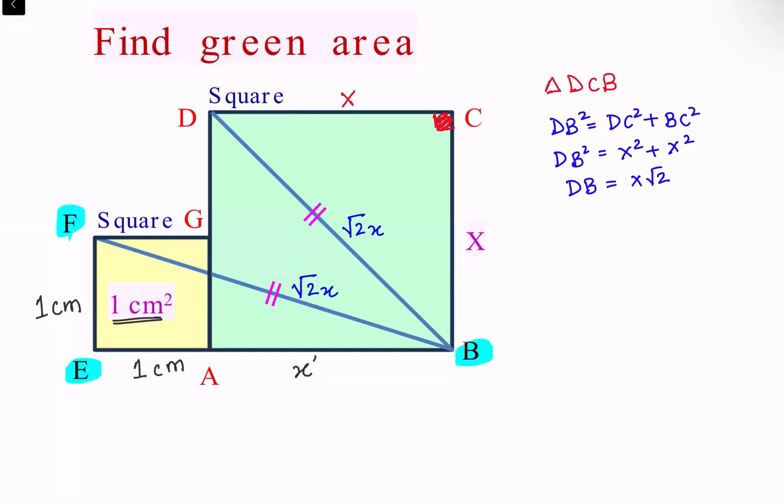This triangle is a right angle triangle and all three sides are known. In triangle FEB, FB square is FE square plus BE square. Putting the values, root 2X square is FE square, that's 1 square, plus BE square, that is 1 plus X whole square.